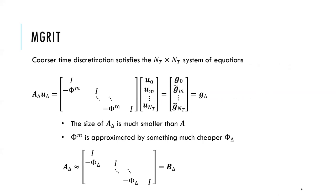The coarser time discretization is equivalent to the following system of equations. The size of A_delta is much smaller than the matrix A. B^M is usually approximated by something much cheaper, B_delta. The matrix A_delta is approximately equal to the matrix B_delta, which has phi_delta instead of B^M.